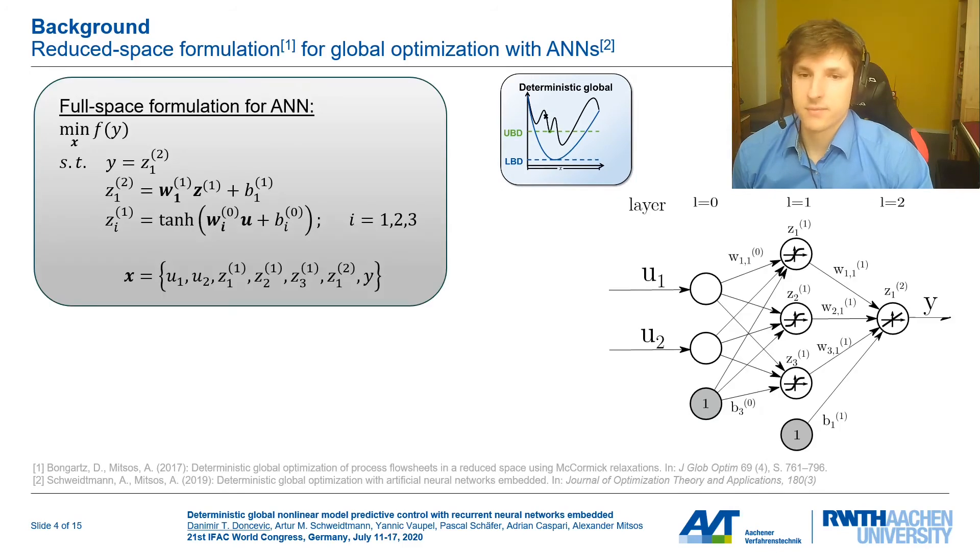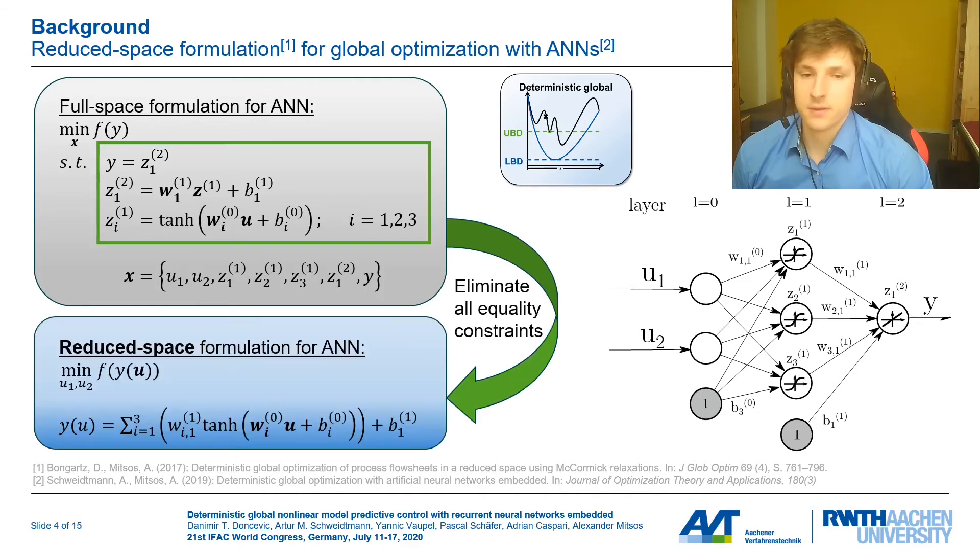Another very important method which we will leverage in this work is the reduced space formulation for global optimization. In this top box, you can see the equations defining this neural network on the right as layer-by-layer equations. If we now use this neural network within an optimization problem, all of these equations become equality constraints. Thus, as you can see, the decision variable vector of the problem also contains all these neuron states and is quite large.